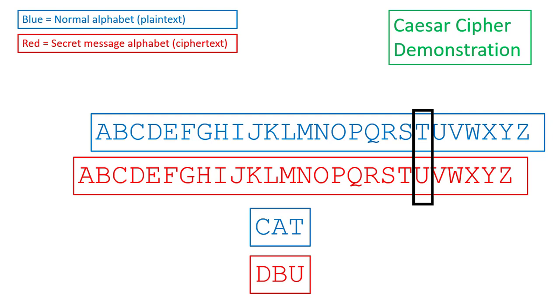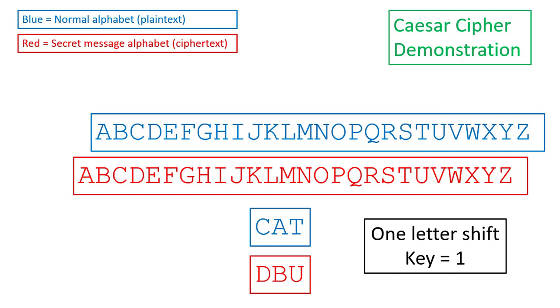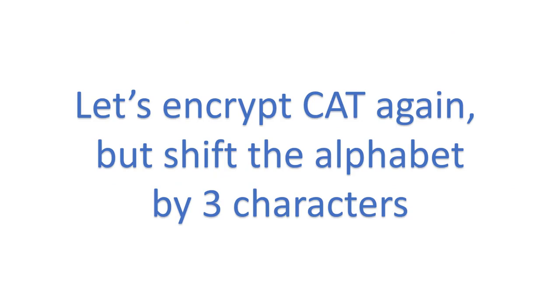In this case, our key would be one, meaning shift the alphabet one character. Now let's encrypt cat again, but shift the alphabet by three characters.